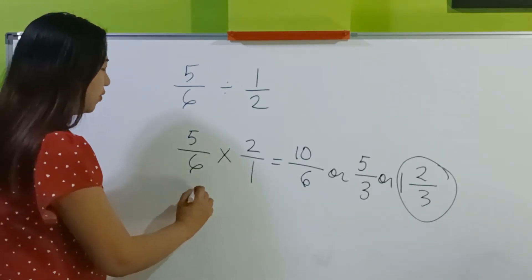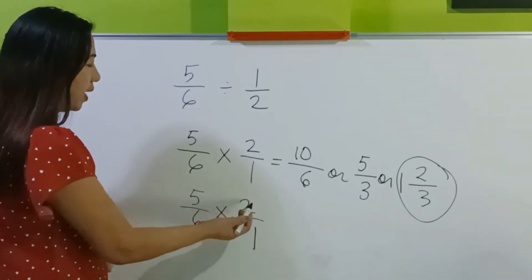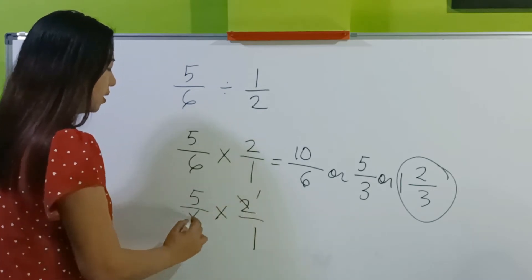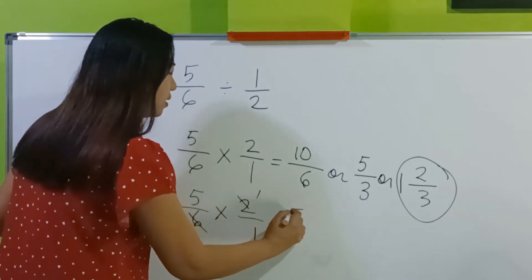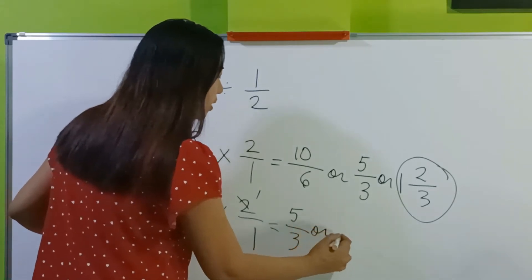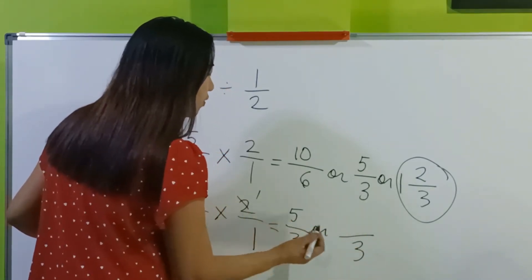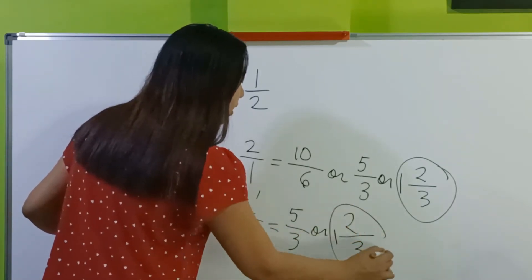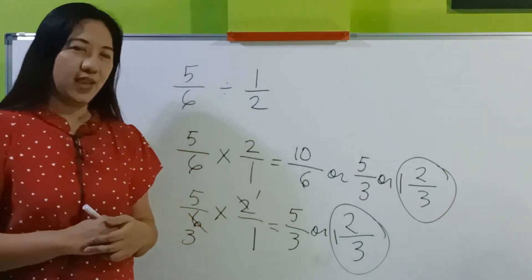Yes, we can also cancel. What can you divide 2 and 6 by? 2 divided by 2 is 1, 6 divided by 2 is 3. 5 times 1 is 5, 3 times 1 is 3. How many 3's are there in 5? 1, and remainder 2 — so 1 and 2 thirds. Did we arrive at the same answer? Yes.